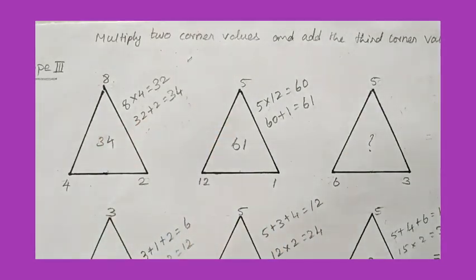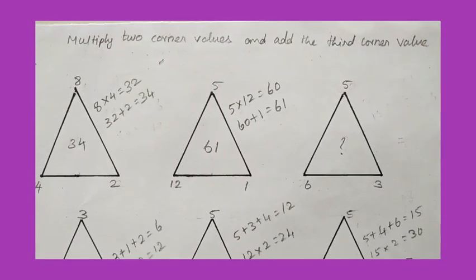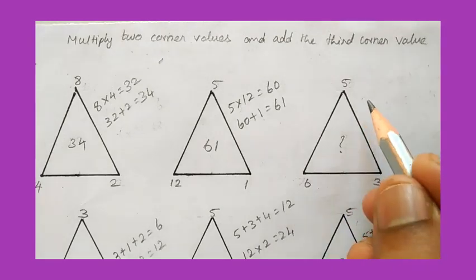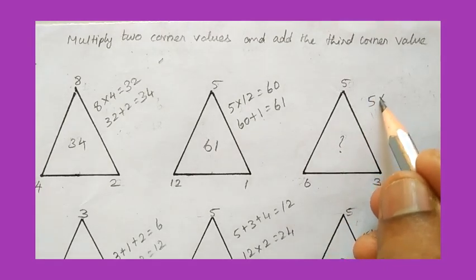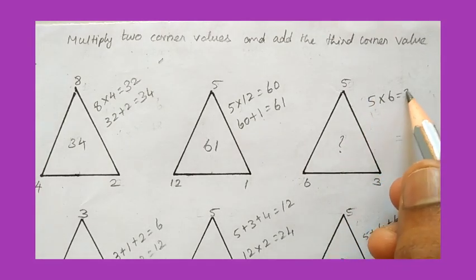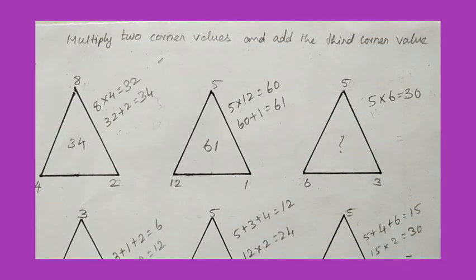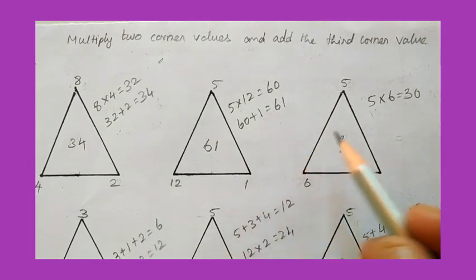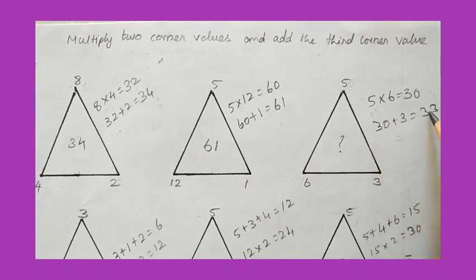Applying the logic to the third triangle: the first two corner values are 5 and 6, so 5 multiplied by 6 equals 30. Adding 30 with the third corner value 3 gives 33. So 33 is the answer.